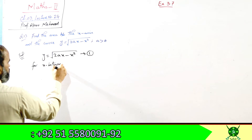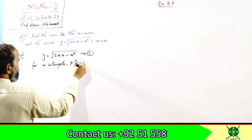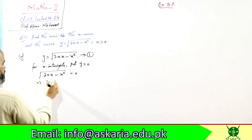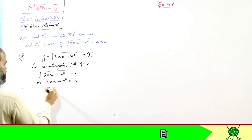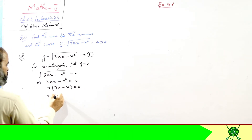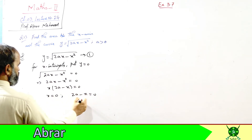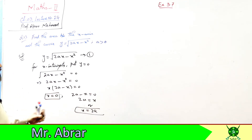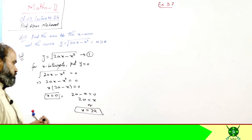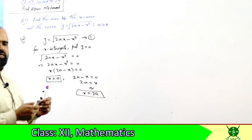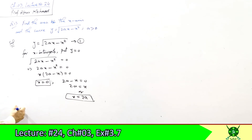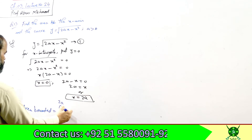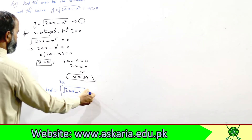For x-intercepts, put y = 0: √(2ax − x²) = 0. Squaring both sides: 2ax − x² = 0. Taking x common: x(2a − x) = 0. This gives x = 0 and 2a − x = 0, so x = 2a. Since a > 0, the value 2a is greater than 0. So the area bounded is the integral from 0 to 2a of √(2ax − x²) dx.